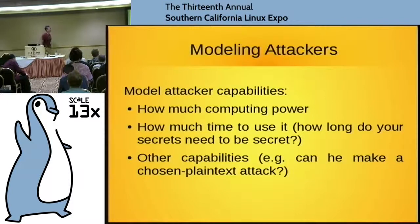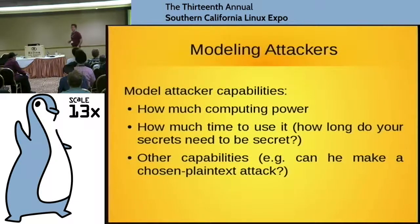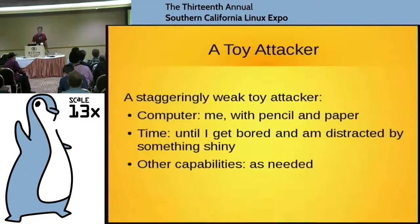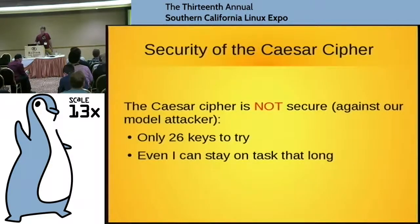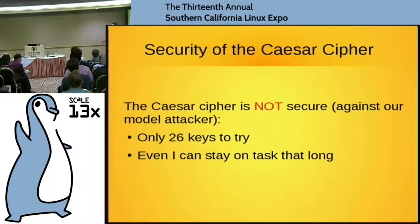What do we have to provide for a model attacker? We have to say how much computing power he has and how much time he can use it. How long do my secrets really need to be secret? We're not concerned with keeping Charlemagne's secrets secret anymore. So we're only using a toy cipher — we might as well give the attacker a toy computer: just me with pencil and paper. How long does he have? I'm easily bored, and pretty soon I'll think of something more interesting, so it has to get done before I get bored and quit. Now we can actually answer the question about the Caesar cipher: it's not secure against our model attacker, because there are only 26 keys to try.